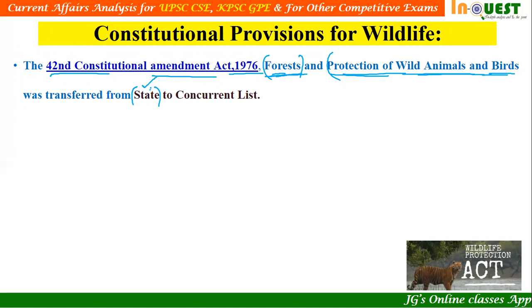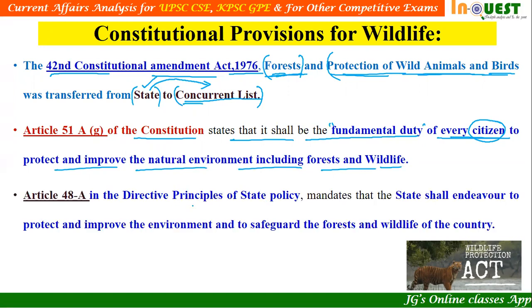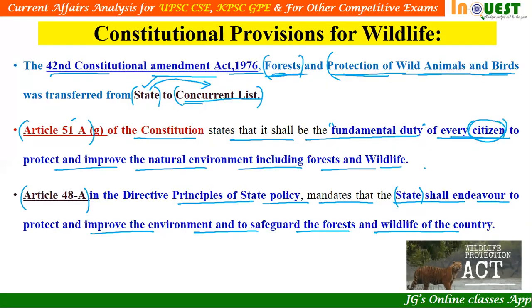After the 42nd Amendment, it became the equal responsibility of state and central government to protect forests and wild animals and birds. Article 51A of the constitution states that it shall be the fundamental duty of every citizen to protect and improve the natural environment, including forest and wildlife. Article 48A, under the Directive Principles of State Policy, mandates that the state shall endeavor to protect and improve the environment and safeguard the forests and wildlife of the country.